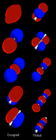Molecular orbitals arise from allowed interactions between atomic orbitals, which are allowed if the symmetries of the atomic orbitals are compatible with each other. Efficiency of atomic orbital interactions is determined from the overlap — a measure of how well two orbitals constructively interact with one another — between two atomic orbitals, which is significant if the atomic orbitals are close in energy. Finally, the number of molecular orbitals formed must be equal to the number of atomic orbitals in the atoms being combined to form the molecule.